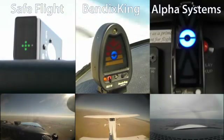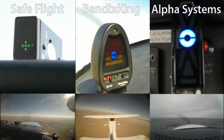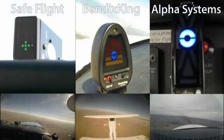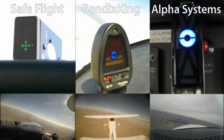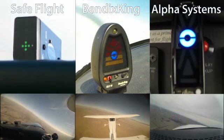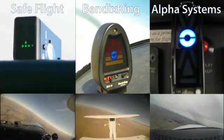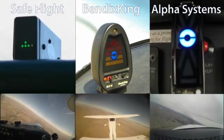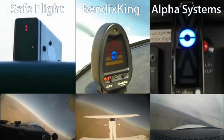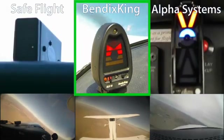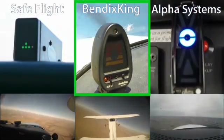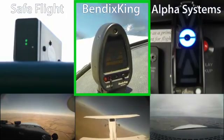Next is a cross-controlled stall, which simulates overshooting the base to final turn. In this maneuver, the pilot presses on the inside rudder and maintains a constant bank with opposite aileron, creating a cross-controlled situation. This can quickly lead to a low-altitude stall and spin if the pilot is not careful. The devices perform as expected and provide a warning to the pilot, with audio alerts such as 'check AOA,' 'caution,' and 'too slow.'